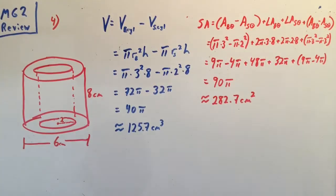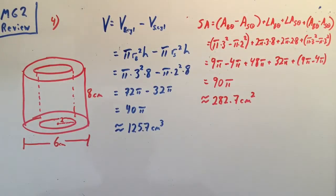For this fourth and final problem, we have a cylinder inside of a cylinder. So volume again is going to be pretty straightforward. You just take the volume of the big cylinder, subtract out the volume of the small cylinder, and that'll give you the volume of this 3D object.